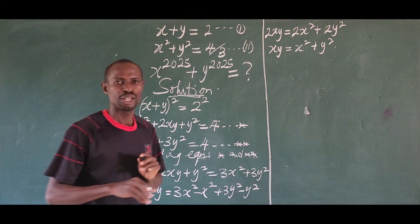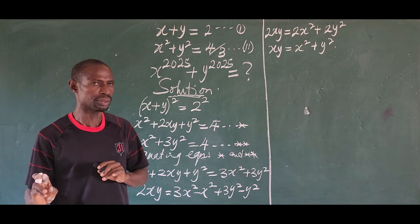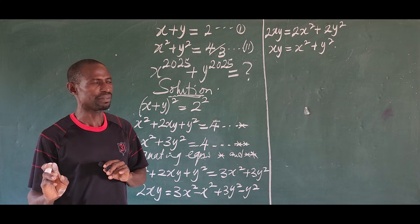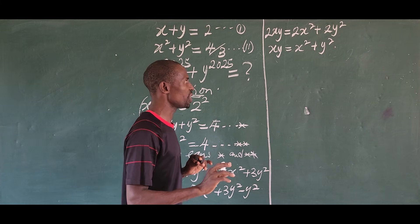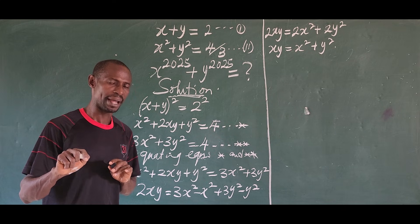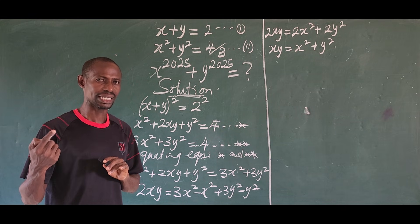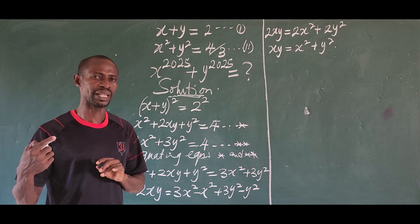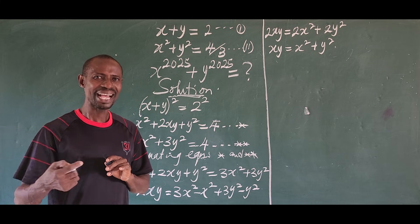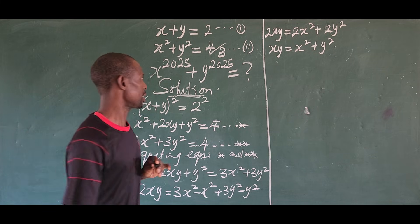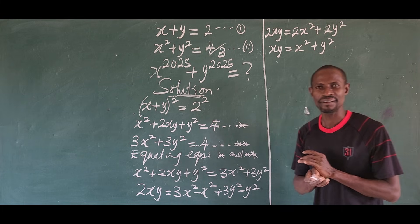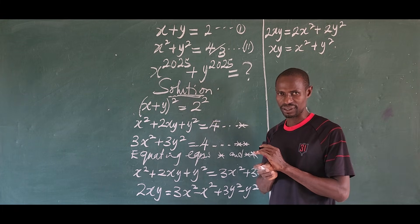Now we multiply both sides of the equation by x plus y. The reason we multiply by x plus y is because we need to reach the power of 2025. Looking at 2025, we need to break it down.